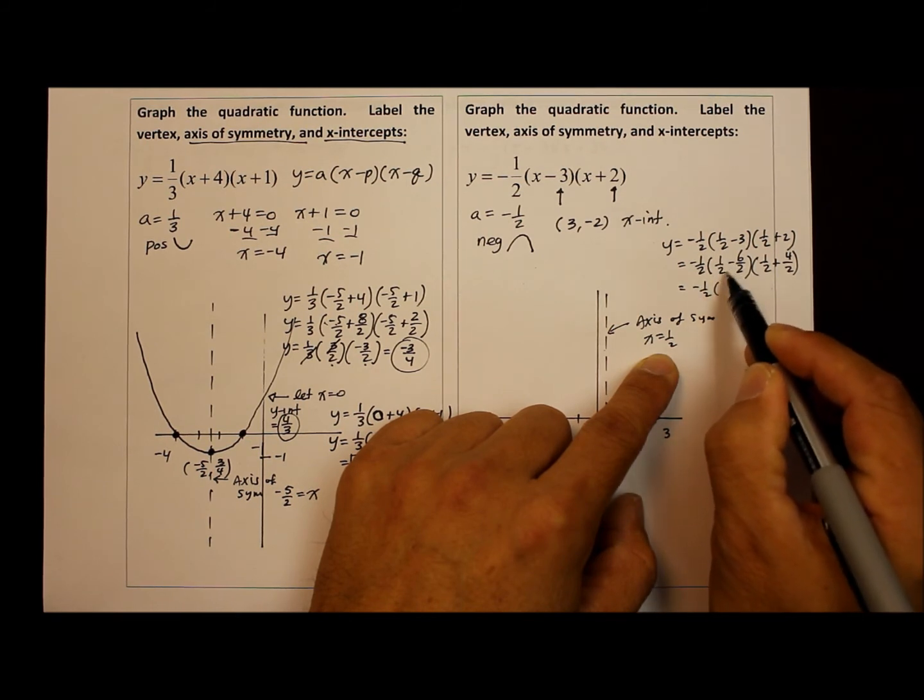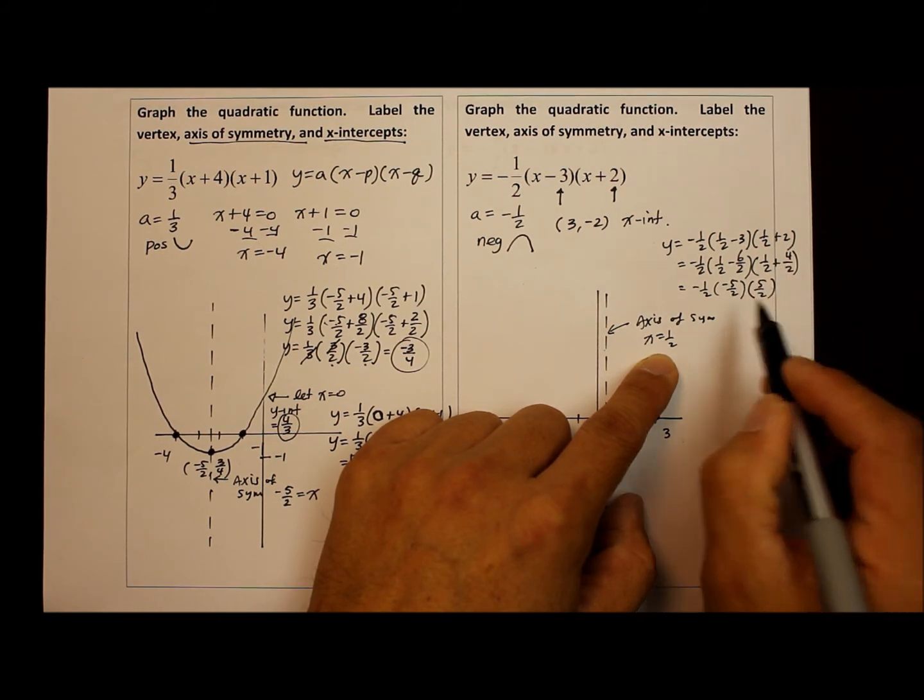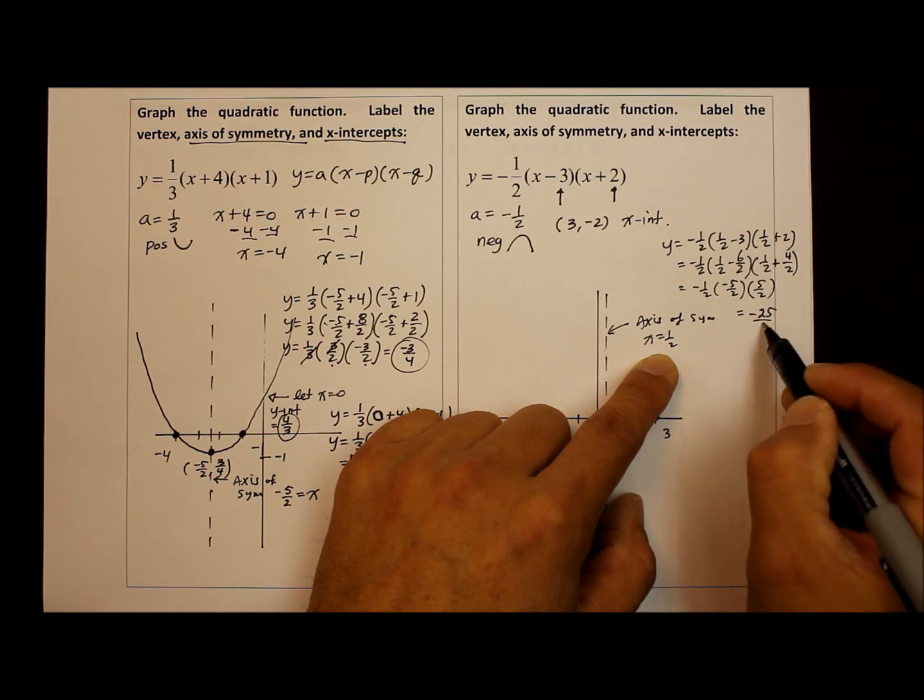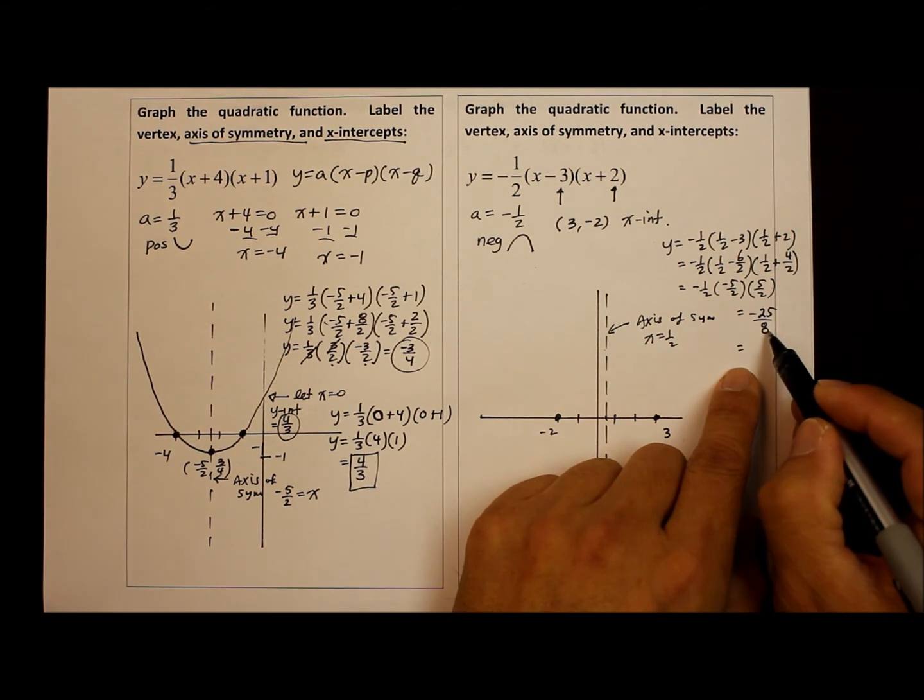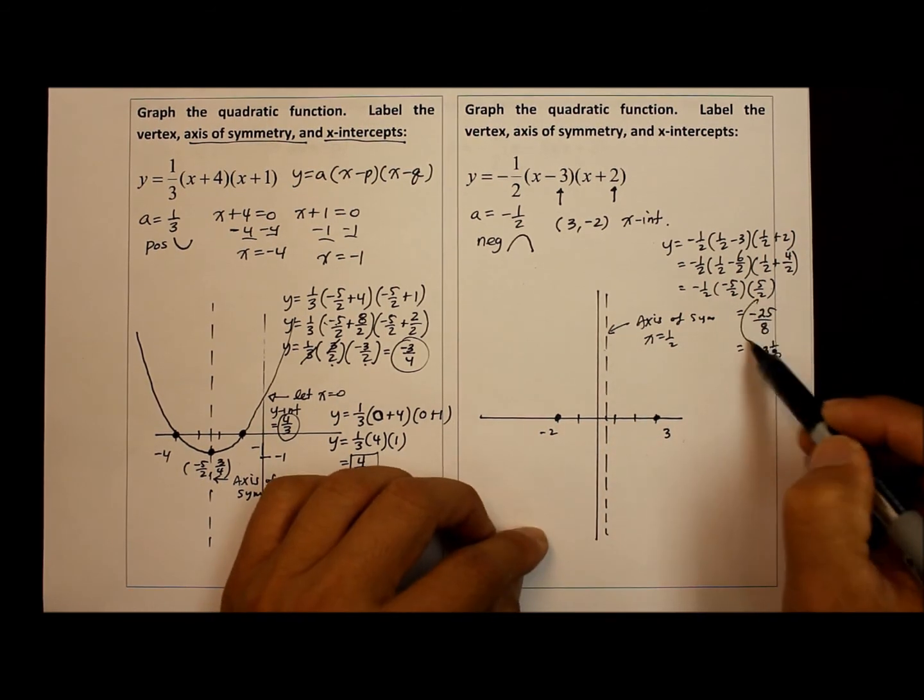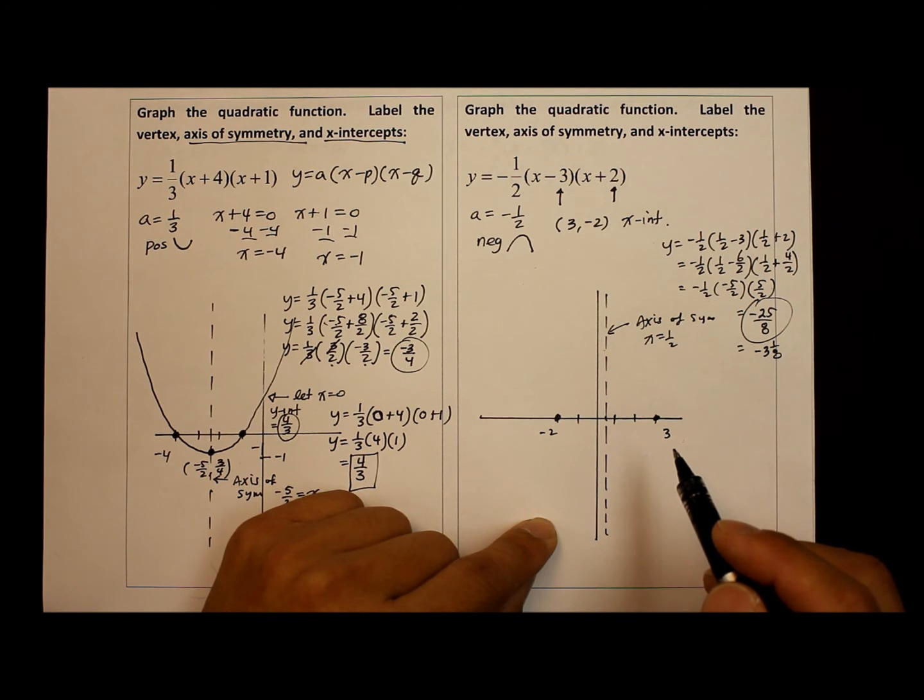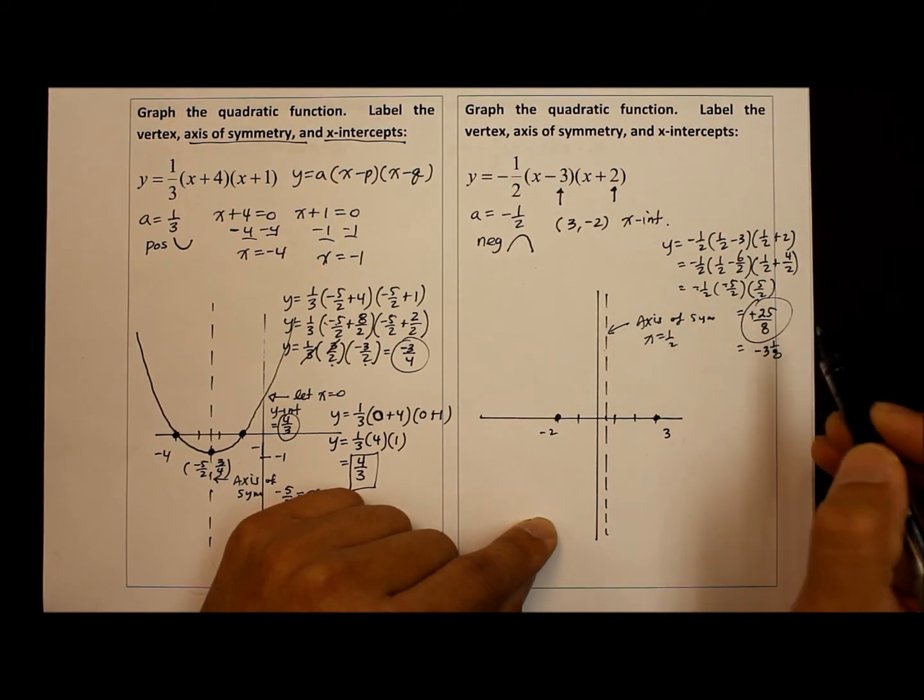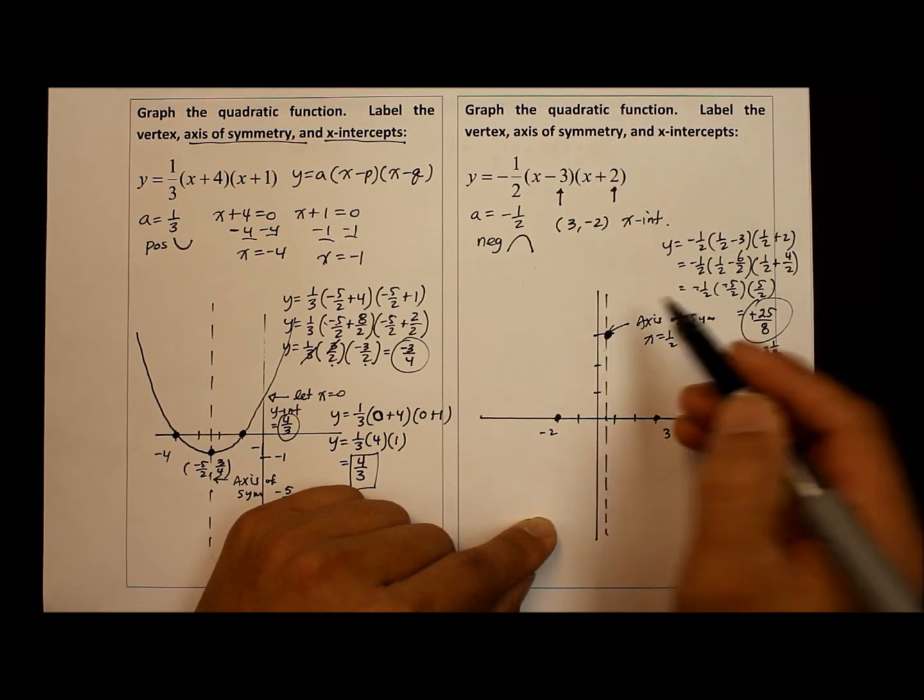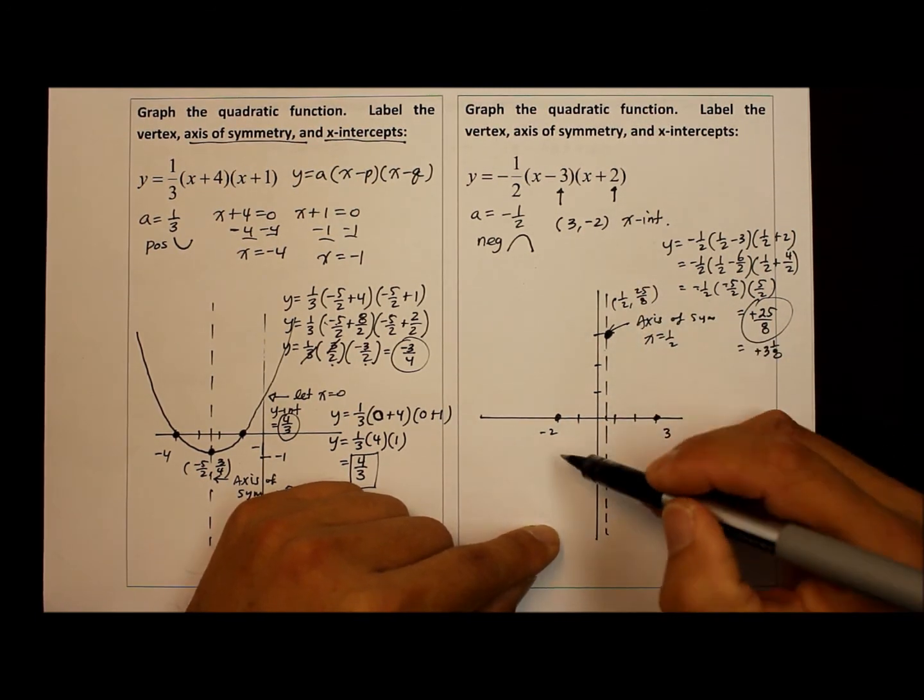So inside we have one over two minus six over two is negative five over two. One over two plus four over two is five over two. Unfortunately, nothing simplifies here. So we have negative twenty-five over two times two times two is eight. Wait, I'm sorry. Negative negative is positive. Phew! That was close. So the vertex is at one-half and positive twenty-five over eight. Thank goodness.